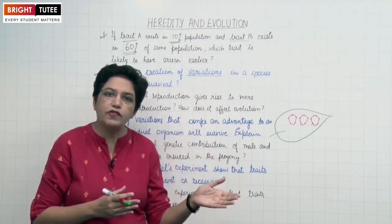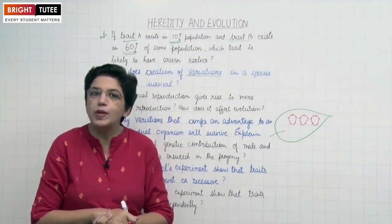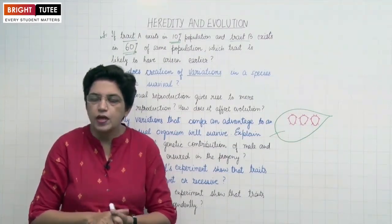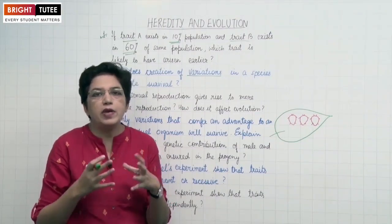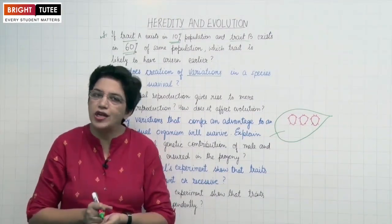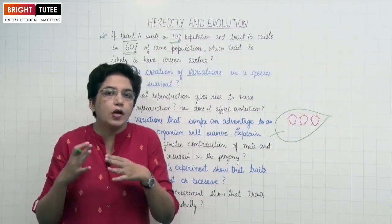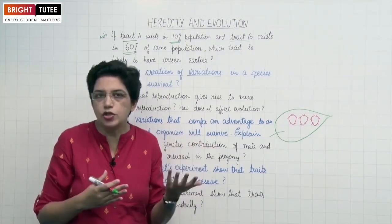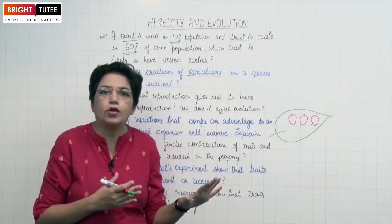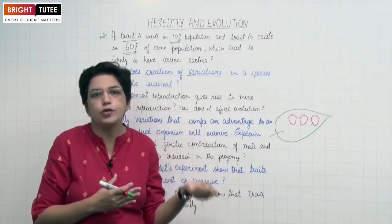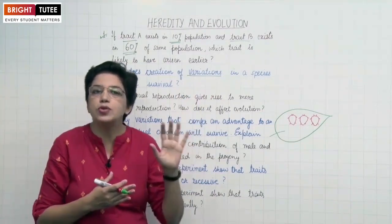But if the variations are unfavorable, then the next generation will be wiped out — they will not be able to survive. For example, some bacteria became resistant to heat due to a variation in DNA copying. This is a favorable variation because they can survive even during high temperatures. The others in which the variation did not occur will not be able to survive. Certain favorable variations help the species to survive.